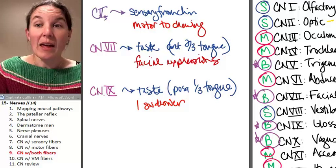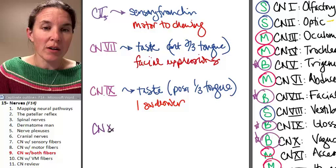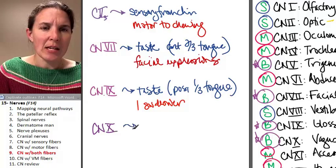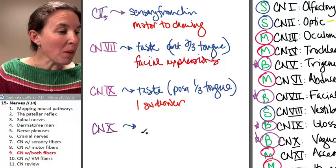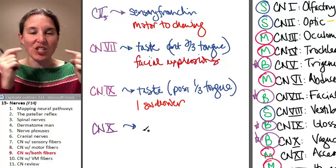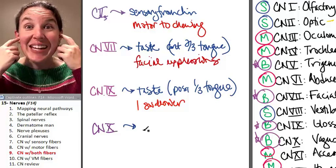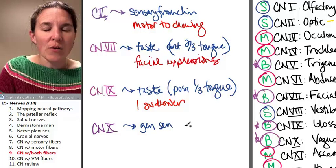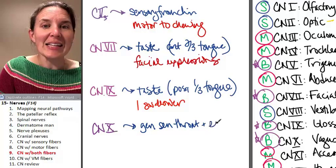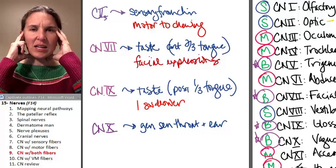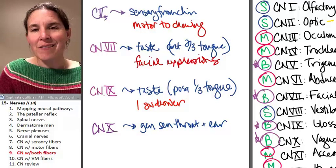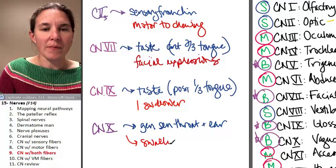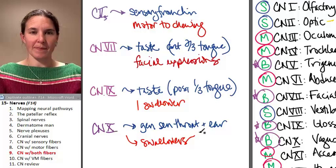And then vagus, cranial nerve, right, totally. Vagus does sensory. It does all my, oh my gosh, it does general sensory, like touch, to your pharynx, to your ear, to your eardrum. It does general sensory to throat and ear. That kind of makes sense. They're kind of in the same general area. And then vagus does motor to the rest of my swallowers. And then vagus, that works.